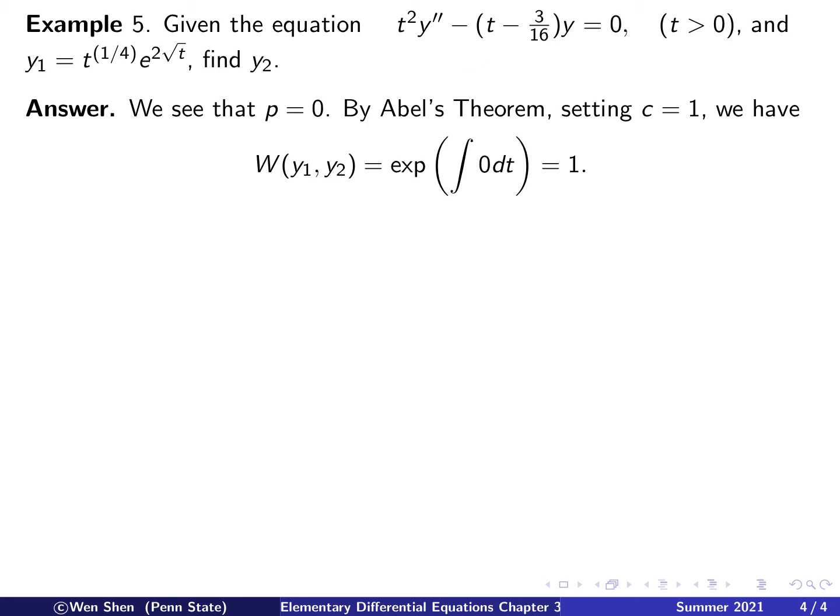Here we see that the Y prime term is not there, which means P is 0. And then by Abel's theorem, by using the constant c is 1, we have, very quickly, the Wronskian is exponential of 0, which is just 1. You can say this integral is 0, and exponential of 0 is 1. Or if you take this integral to be 1, and then you get exponential, which is constant. And you can multiply it by 1/e and get 1. So this is what I mean by just choosing the convenient constant to get a convenient expression for the Wronskian.